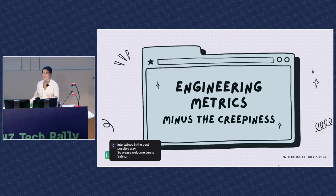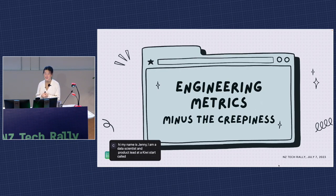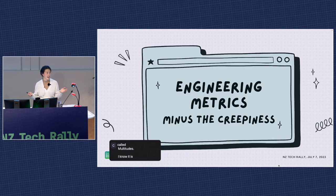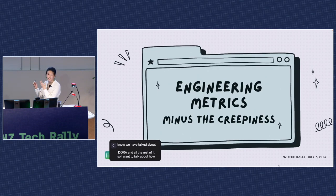Hi. My name is Jenny. I'm a data scientist and product lead at a Kiwi startup called Multitudes. I just really appreciate everyone being here. I know it's 3:30 — peak nap time — so thanks for being here. I know we've heard a lot about engineering metrics today, DORA and all the rest of it. I'd like to expand on that by talking about how we actually use these metrics to uncover insights about how our engineering teams are going in a way that's empowering, sustainable, and crucially, not creepy.